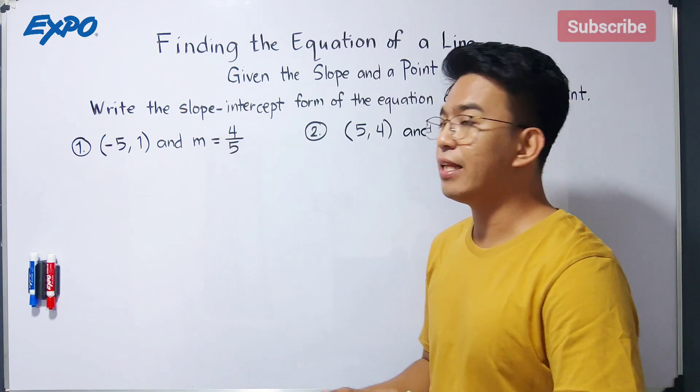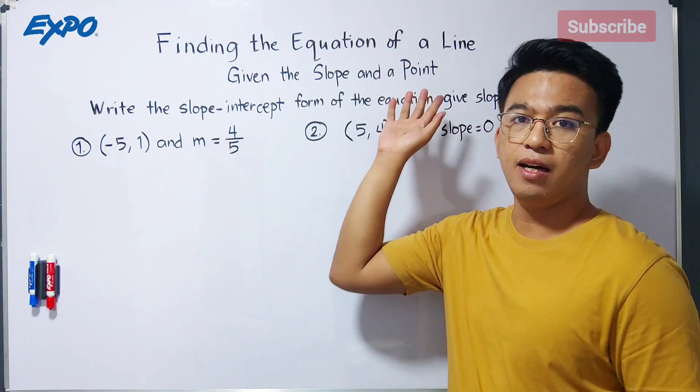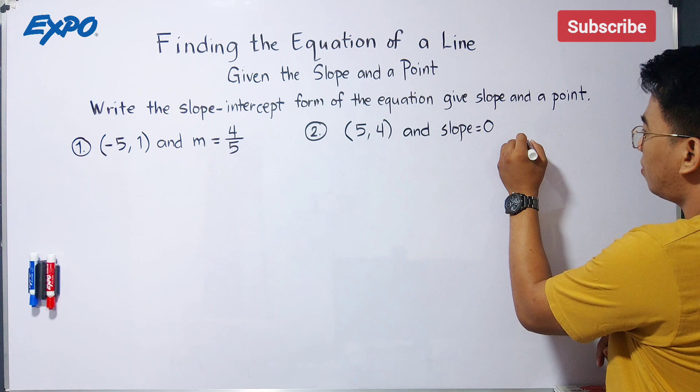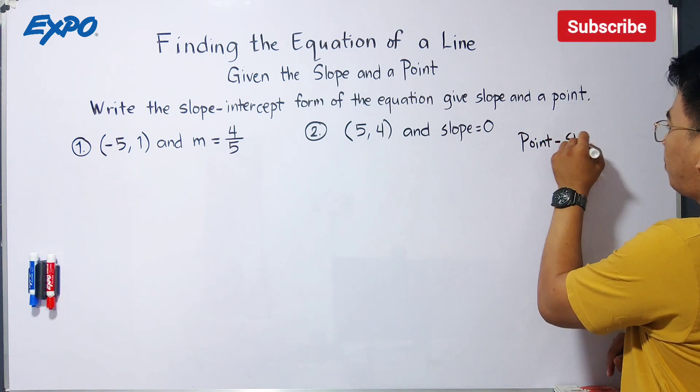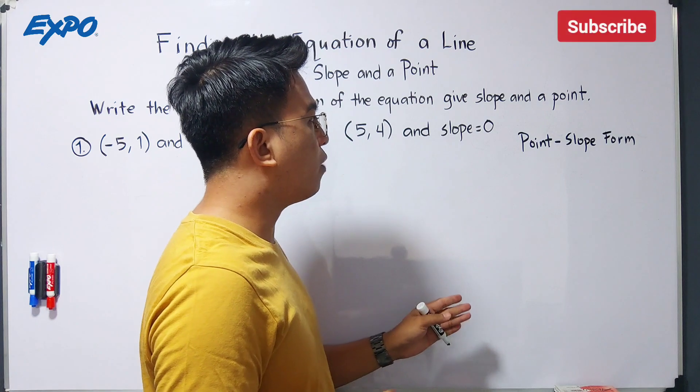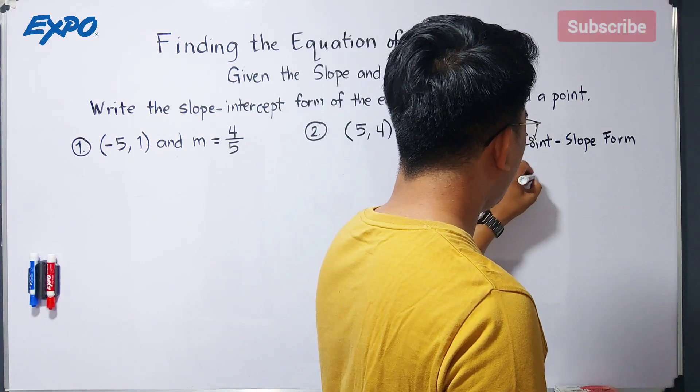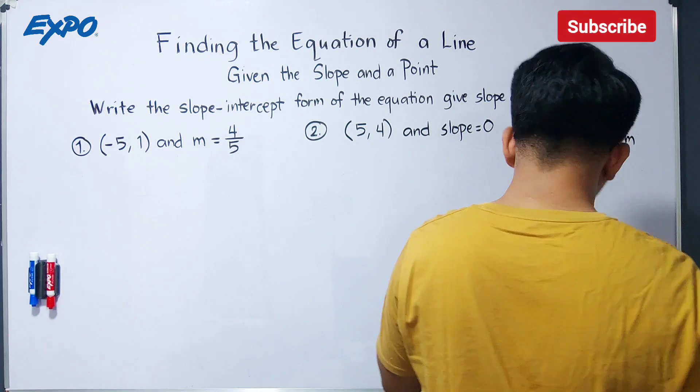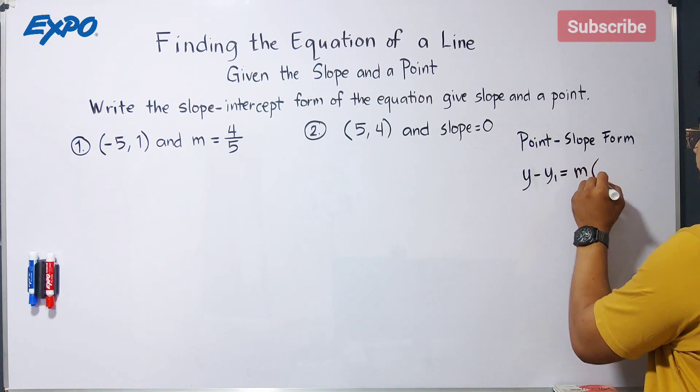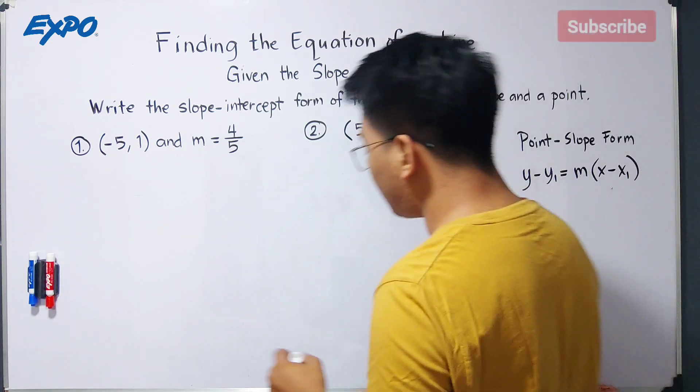So what we have here is that we will try to find the equation of a line, of a linear equation, given the slope and a point. To find that equation, we will use the point-slope form. The point-slope form is used when we are given a point and a slope of the given linear equation. So what is our formula? Our formula is simply y minus y sub 1 is equal to m times x minus x sub 1.